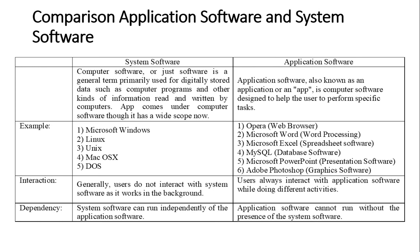A comparison table shows the differences between system software and application software. Examples of common operating systems include Microsoft Windows, Linux, Unix, Mac OS, and DOS. Examples of applications include Word, Excel, web browsers like Opera, MySQL database, PowerPoint, and Adobe Photoshop. There are also comparisons in terms of interaction and dependence.